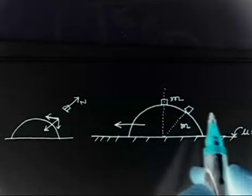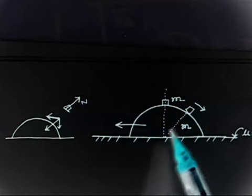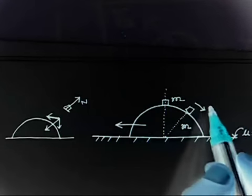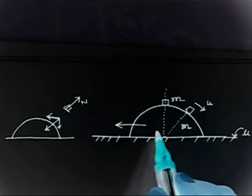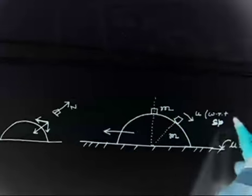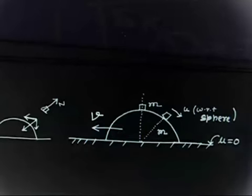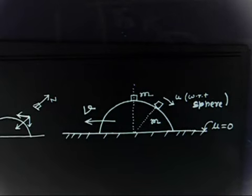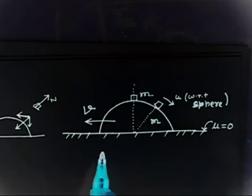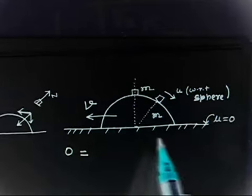Let us say the bigger mass is moving with velocity v. It will be easier if I define the velocity of the smaller mass with respect to the bigger mass. Let the velocity of the smaller mass with respect to the sphere be u. We can apply momentum conservation in the x-direction. Initially the system was at rest, so the total momentum in the x-direction must remain zero.